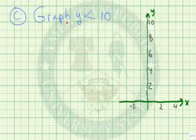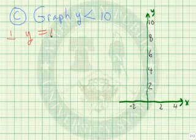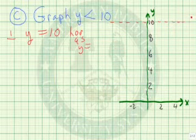As a last example, let's graph y less than 10. And this will be a half plane. So the first thing we do is we consider y equal to 10. If you recall, horizontal is y equals. This is a horizontal line, y equals 10. So we'll draw the dotted line there.